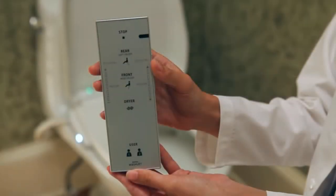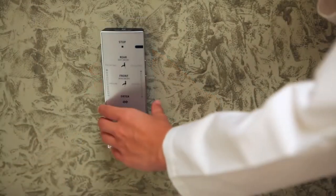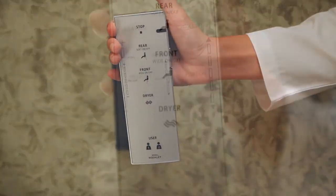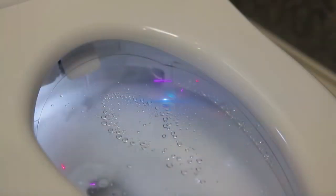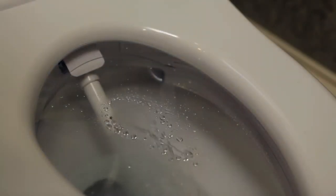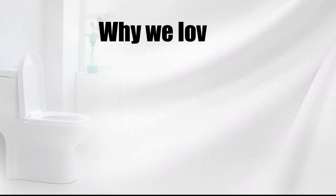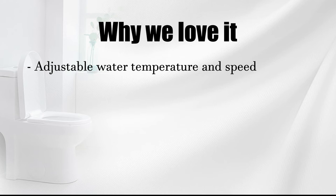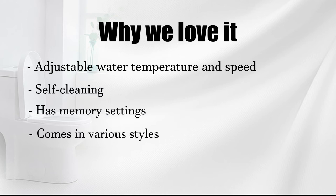Other features include both a rear and a front spray with self-cleaning nozzles, a side control panel that recalls personalized settings, and a deodorizer. It's available in both elongated and round styles. Why we love it? Adjustable water temperature and speed. Self-cleaning, has memory settings, comes in various styles.